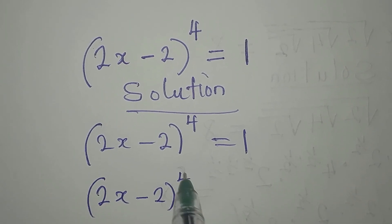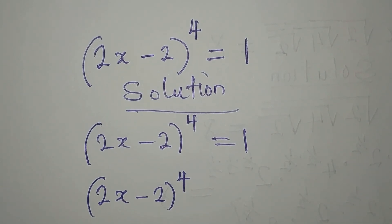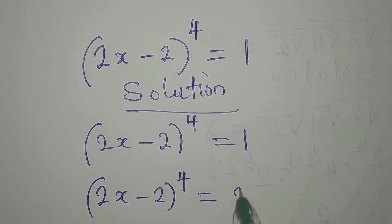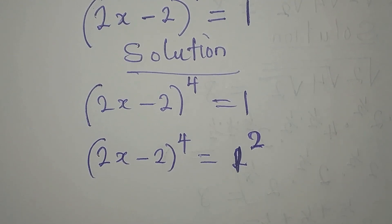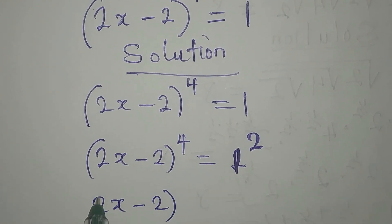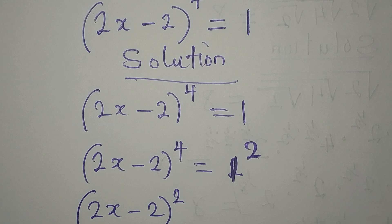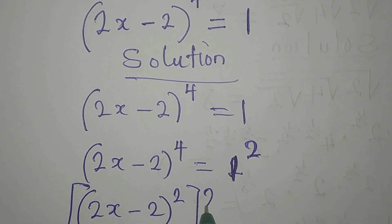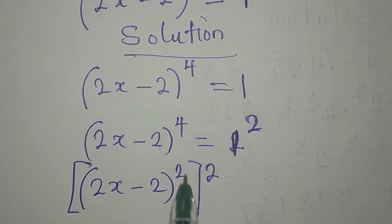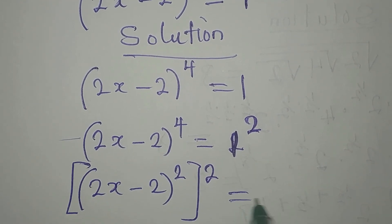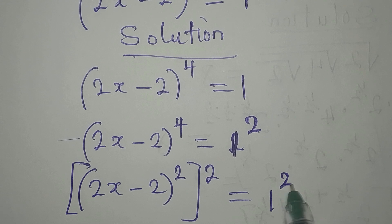Do you know that this is the same as 2x minus 2 to the power of 4, which is equal to 1? This is the same as 1 to the power of 2. On the left we have 2x minus 2, then another power of 2, because if you open the brackets you get this back, and this is equal to 1 squared.